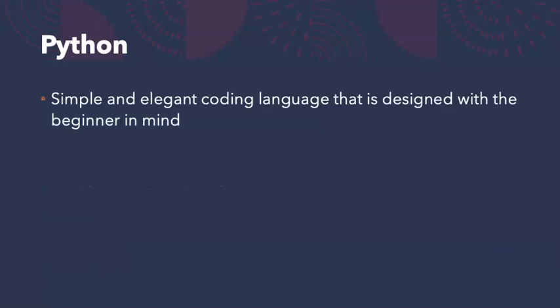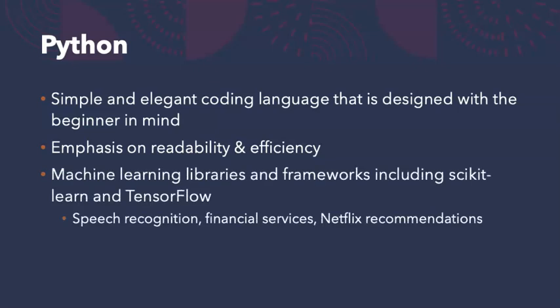Python is a relatively new programming language released in 1991. Python's simplicity and elegance makes it a great choice for new programmers. Its ruling design philosophy is readability — in other words, code is easy to follow even for a non-coder. Python is used extensively for machine learning and has many powerful libraries. Machine learning includes things like speech recognition, financial services, and even recommendations that Netflix serves up to you whenever you log in.